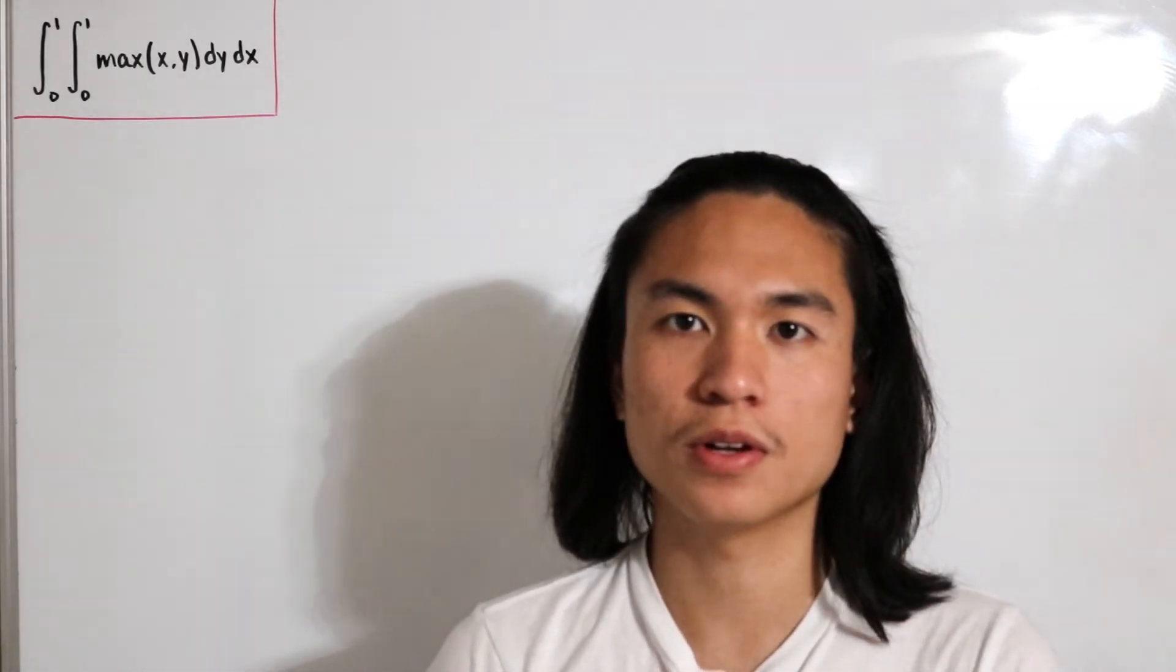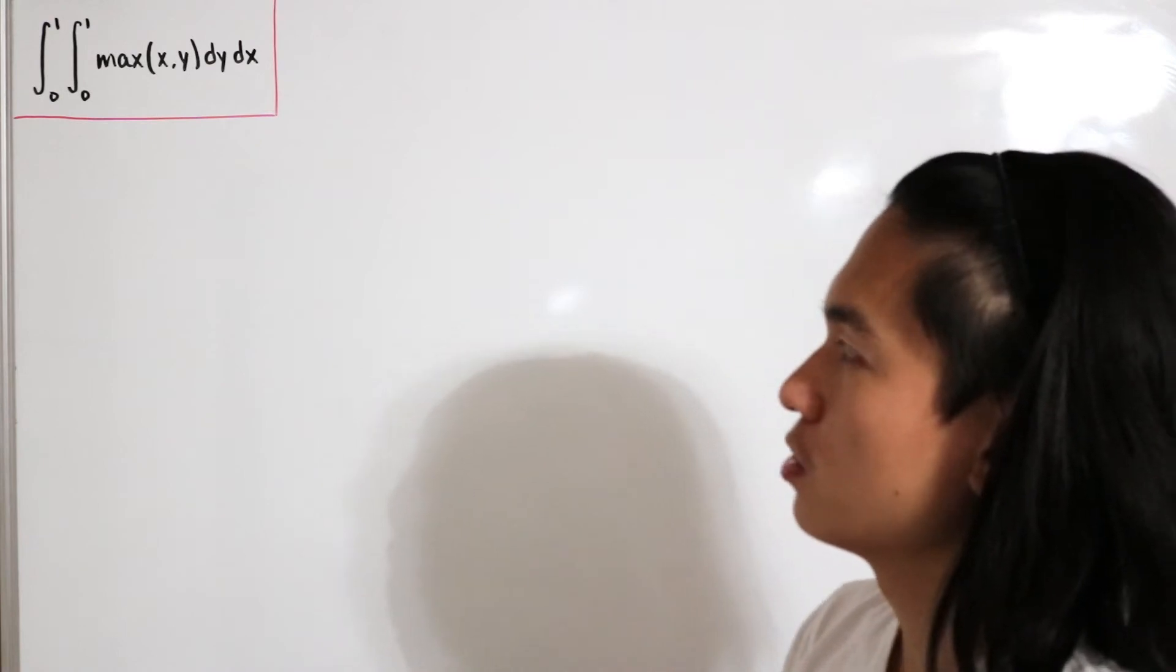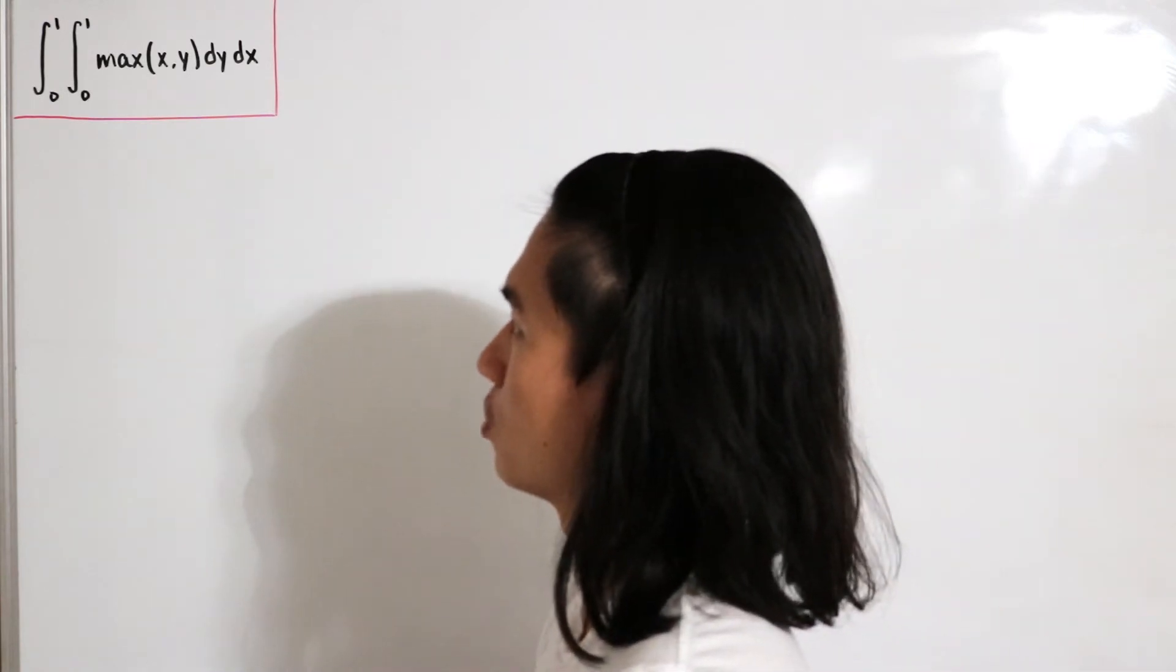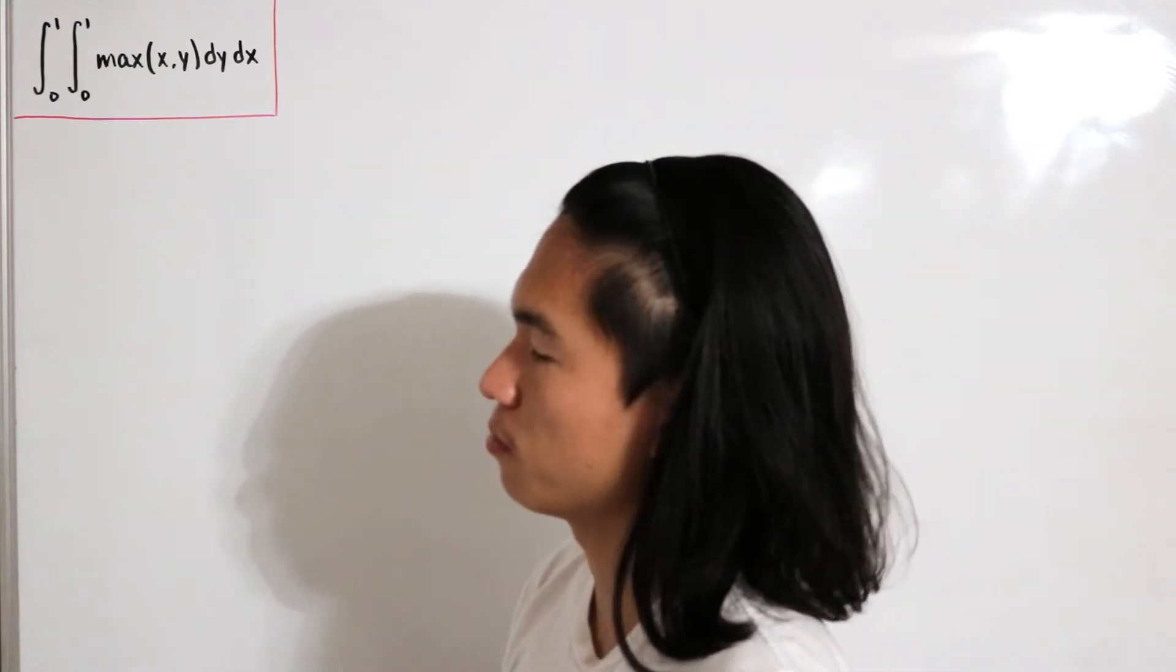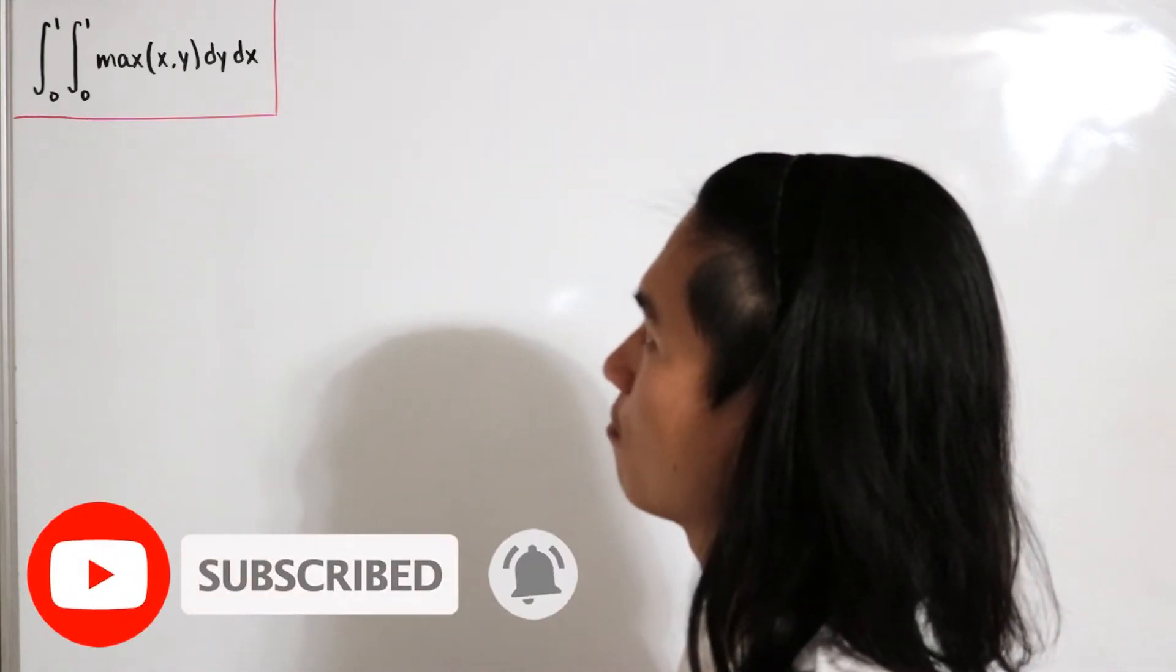Welcome back to another video. In today's video we have the following double integral. We're evaluating our bounds from 0 to 1 and 0 to 1 for y and x of the maximum of x, y.